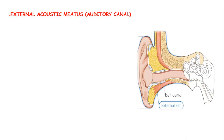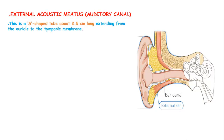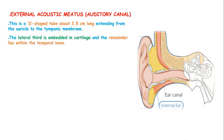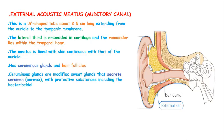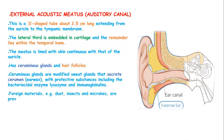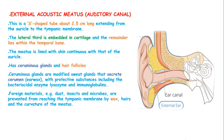The external acoustic meatus, known as the auditory canal, is an S-shaped canal or tube about 2.5 cm long extending from the auricle to the tympanic membrane. The lateral third is embedded in cartilage and the remainder lies within the temporal bone. This meatus is lined with skin continuous to that of the auricle, and it has ceruminous glands and hair follicles. These ceruminous glands secrete cerumen and are modified sweat glands. The earwax or cerumen is a protective substance containing bactericidal enzymes like lysozymes and immunoglobulins. Foreign materials such as dust, insects, and microbes are prevented from reaching the tympanic membrane by the wax, hairs, and the curvature of the meatus.